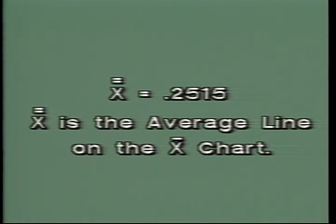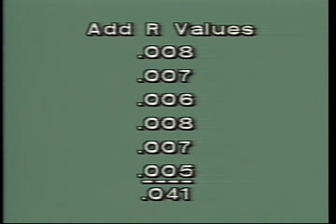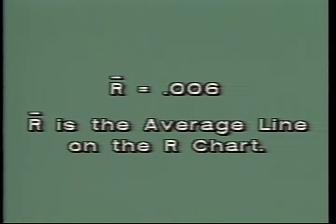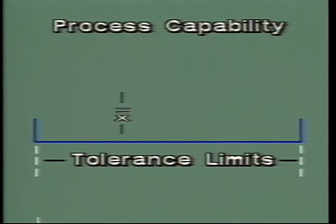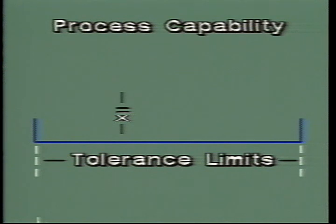The X-double-bar value is the center line or average line on an X-bar control chart. Next, compute the R-bar value. Add all R-values together and divide by the number of values. The R-bar value is the center line on the R-chart. These two values, the X-double-bar and R-bar, are used to make up a control chart. But before we begin the production run, we need to find out how capable the process is. The X-double-bar value is the midpoint of the distribution of sizes. By placing a line representing this value on a scale that represents the allowable range of the dimension, you can see the location of the midpoint.